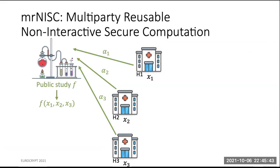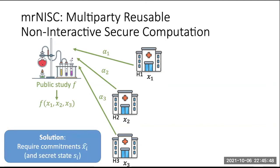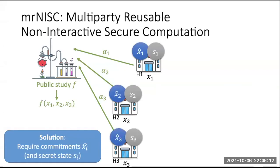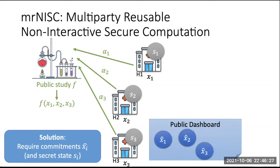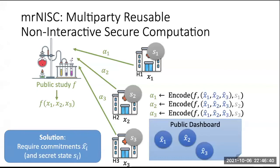Therefore, we need to add something more to the protocol in order to guarantee security. The minimal thing required is to somehow force each party to commit on its input before the beginning of the evaluation. The solution is that each party, before evaluating functions on respective inputs, publishes on a public bulletin board some encoding of its input — think of it as a cryptographic commitment, a hiding commitment. This commitment is published, and each party remembers for itself some secret associated with this commitment.